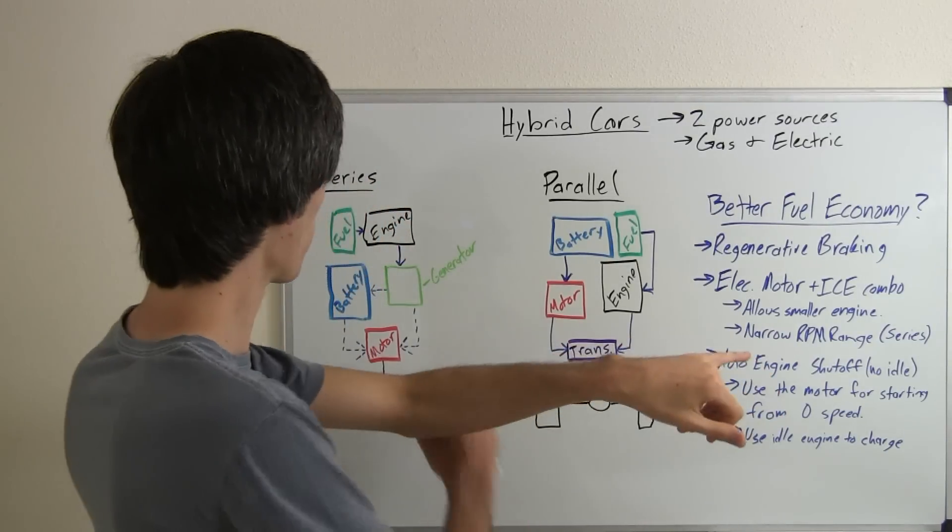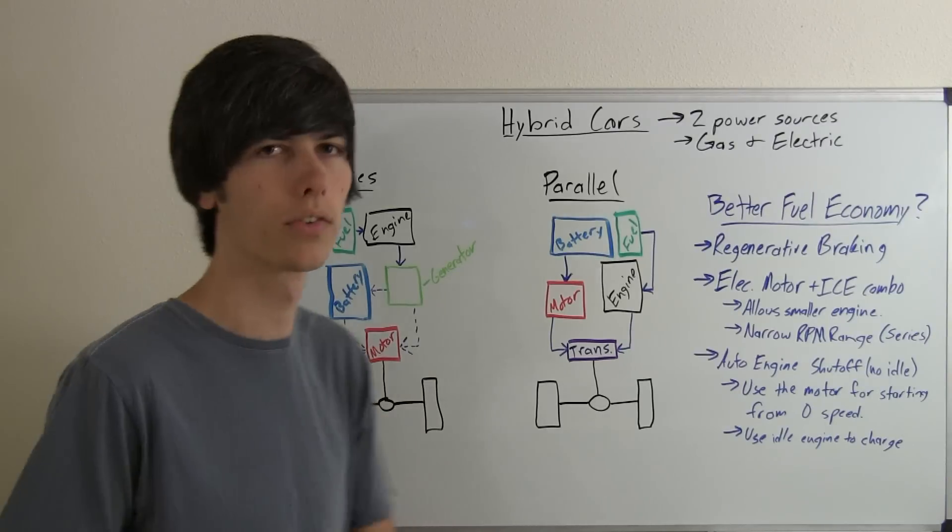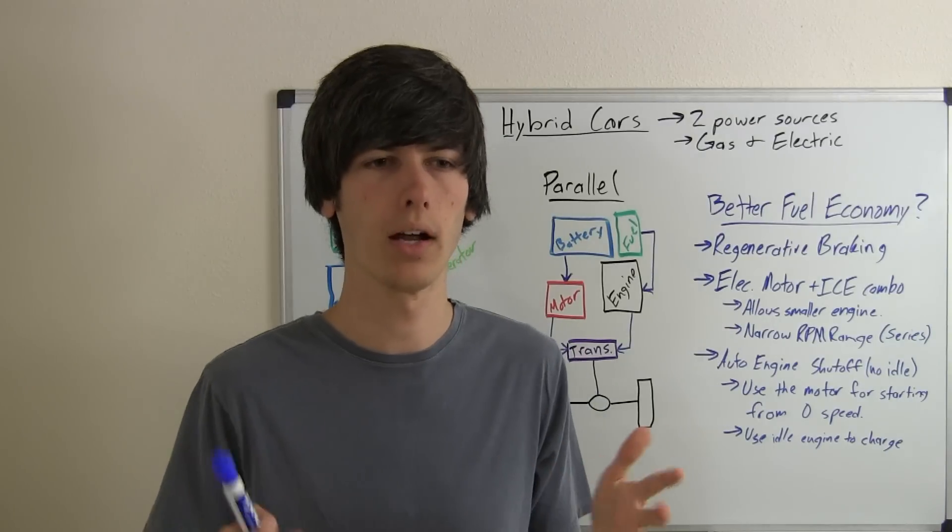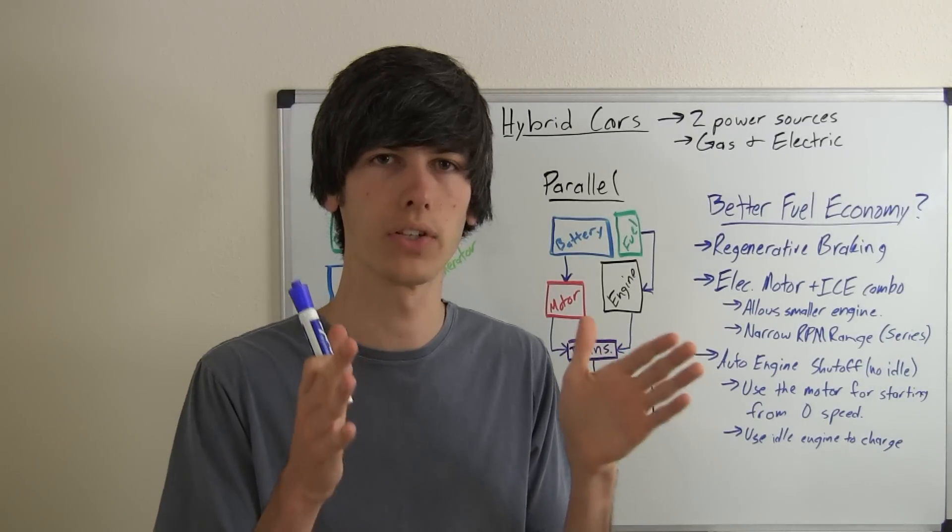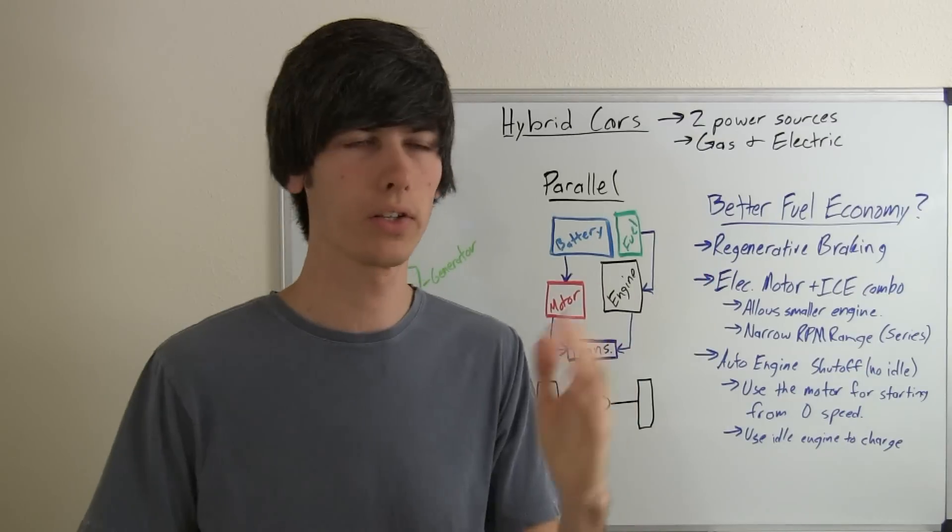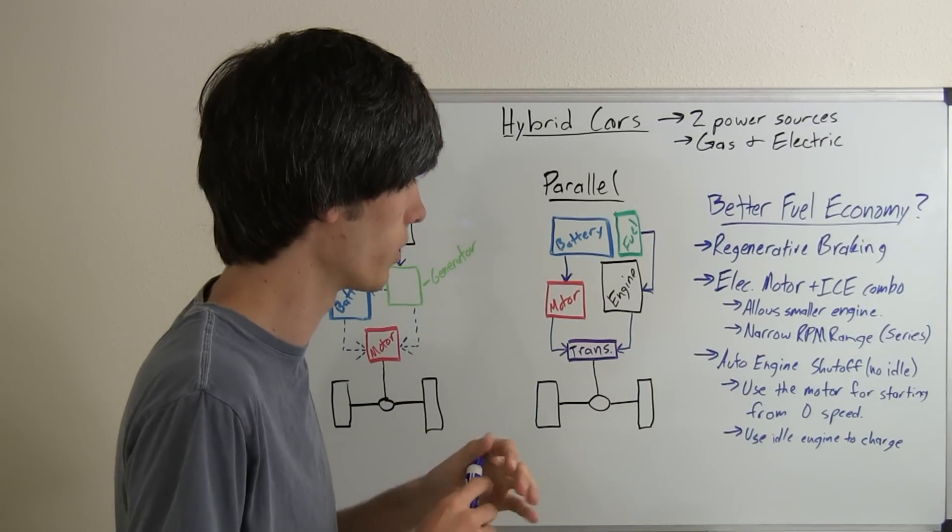Also, with this series, when you've got an engine powering a generator and it's not directly linked to the wheels, that means you can spin that engine at any RPM you want. So you can leave it at a set efficient speed rather than having it go through a rev range where there's inefficiencies, like in standard internal combustion engine powered cars.